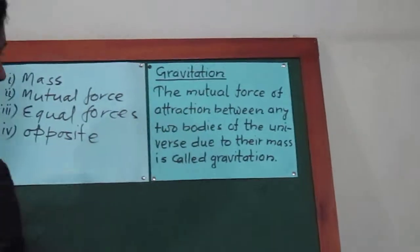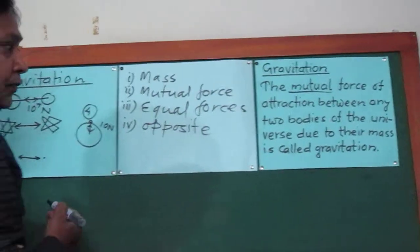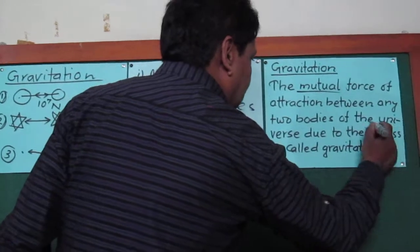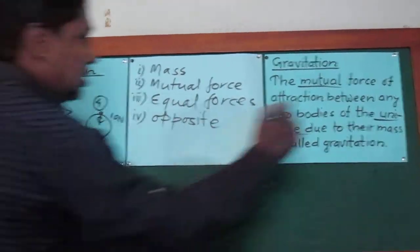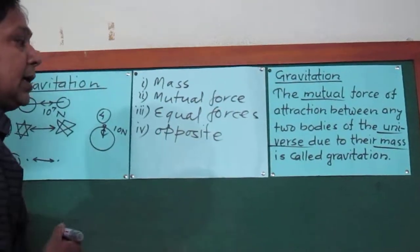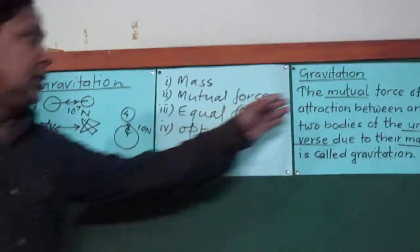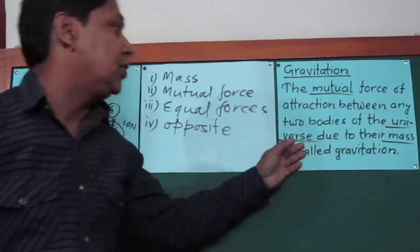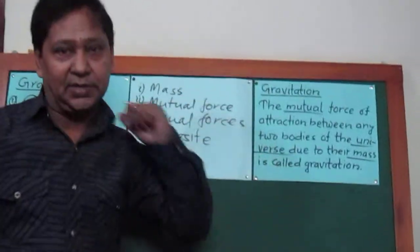This is a mutual force, and this is true for any object of this universe. This mutual force arises due to the mass of the body, and they act in opposite directions. The mutual force of attraction between any two bodies of the universe due to their mass is called gravitation.